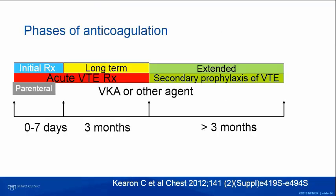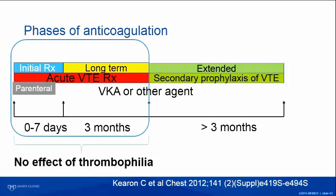Let's take a high-level view of anticoagulation for venous thrombosis. When a patient experiences a venous thrombotic event, there's initial acute therapy that lasts typically about three months. Knowing whether the patient has hereditary thrombophilia does not affect acute management of anticoagulation. You're still going to treat the patient with heparin followed by warfarin, low-molecular-weight heparin, or one of the oral direct-acting anticoagulants.